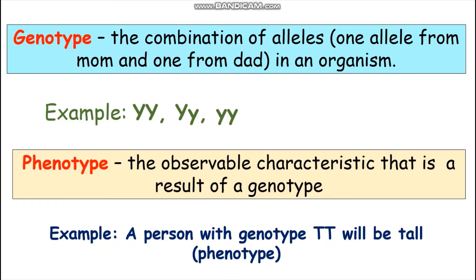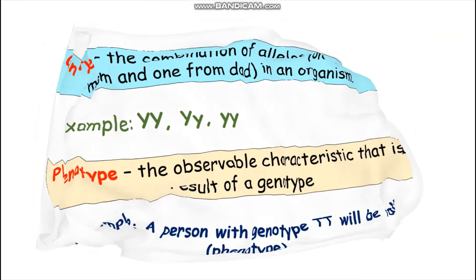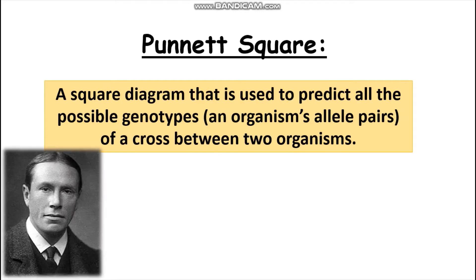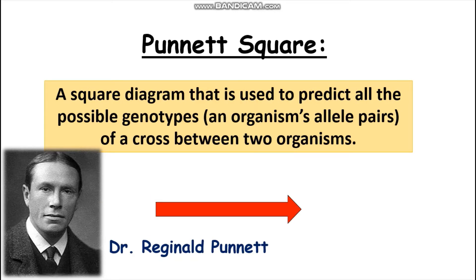So you see the difference between genotype and phenotype. Back to Punnett Squares — what are they? A Punnett Square is a square diagram that is used to predict all the possible genotypes of a cross between two organisms. In the 1900s, Dr. Reginald Punnett created the Punnett Square. And this is an example of how one may look.